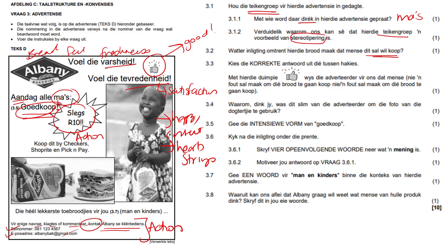Kies die korrekte antwoord uit die tussenhaakies. Met hierdie duimpie — this little thumbs up here — wys die adverteerder vir ons dat: number one, dat mense nie 'n fout sal maak om die brood te koop nie; or number two, dat mense 'n fout sal maak om die brood te koop. A thumbs up is usually an indication of good, so therefore they won't make a mistake — hulle sal nie 'n fout maak. So it's the first option.